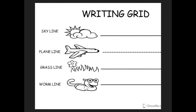Our next letter is D. D is also a plain line round letter. Put your pencil on the plain line, fly backwards, curve to the grass line, back up to the skyline, and pull straight down. D, dog, d.